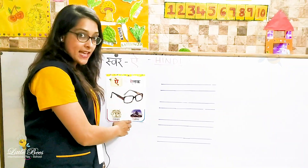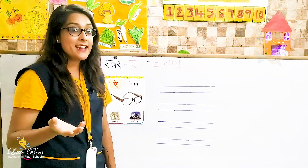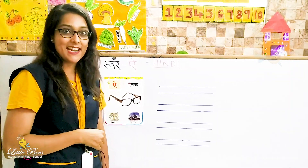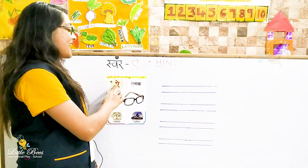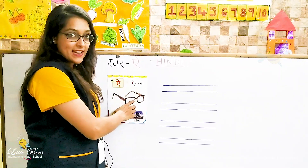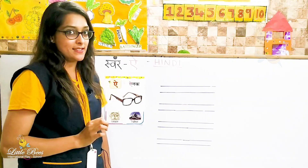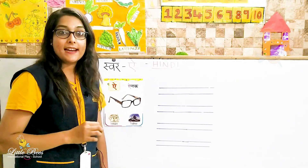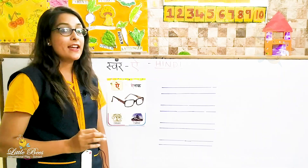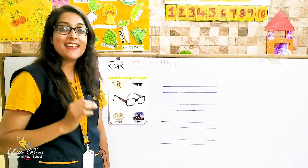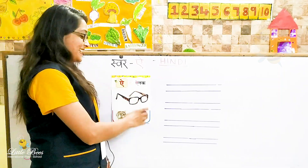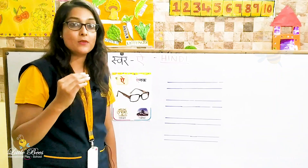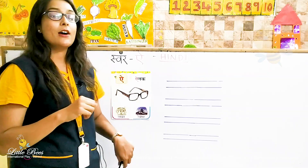Ae say airawat. Airawat means vehicle of Lord Indra. Ae say Everest — Everest is the highest mountain peak. So now let's see how to write the swar ae.